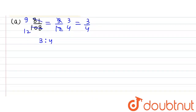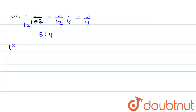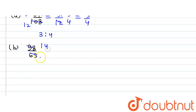Part B says 98 to 63. So in Part B, we have 98 divided by 63. This will be divisible by 7, so we will have 14 in the numerator and 9 in the denominator. We get 14 divided by 9, and the ratio is 14 ratio 9.